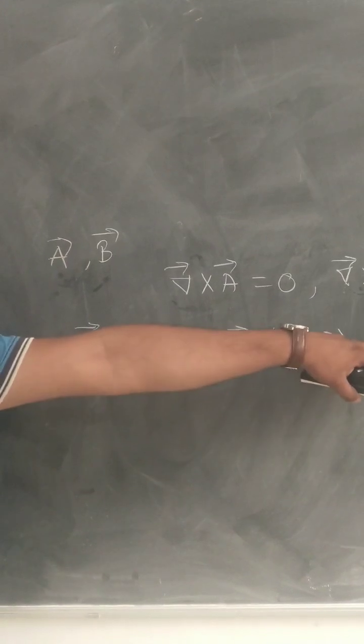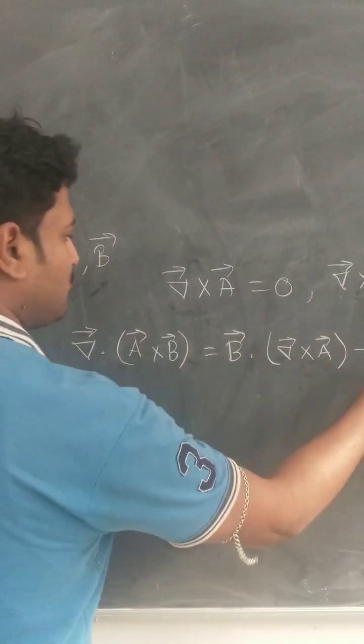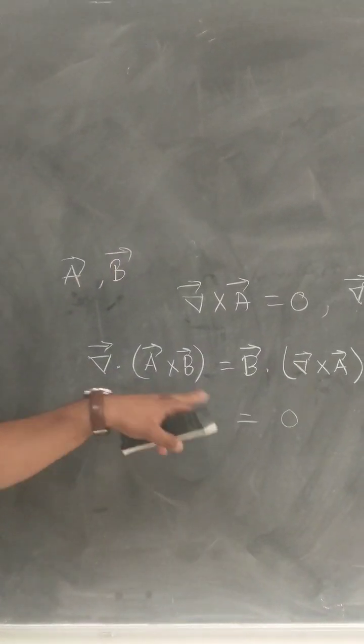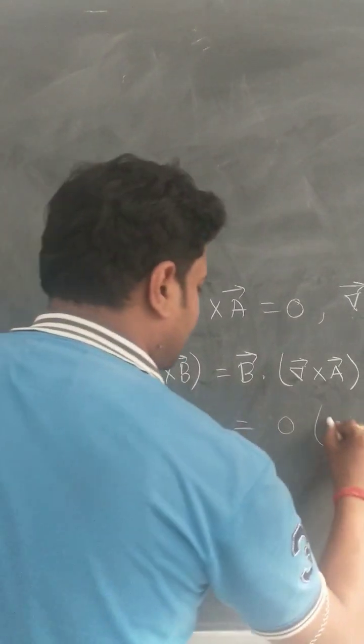As A vector and B vector are conservative vectors, so these two values will be 0. So, 0 minus 0, that should be equals to 0. So, A vector cross B vector is solenoidal.